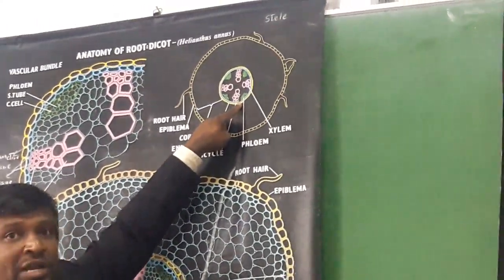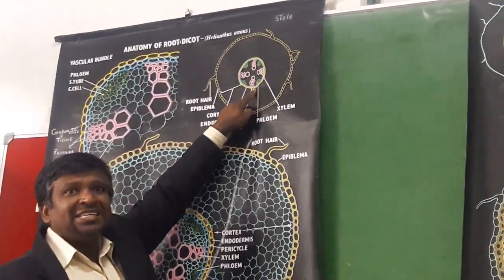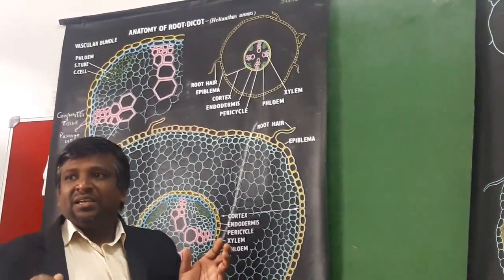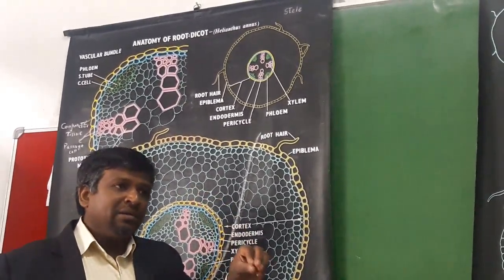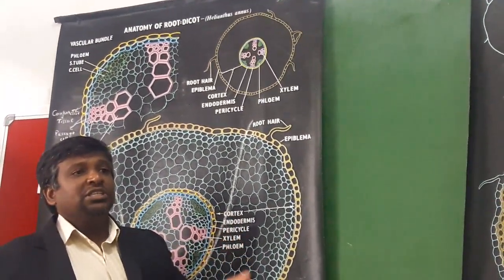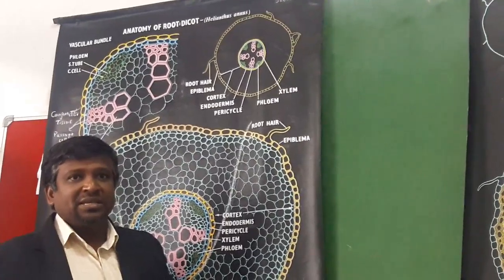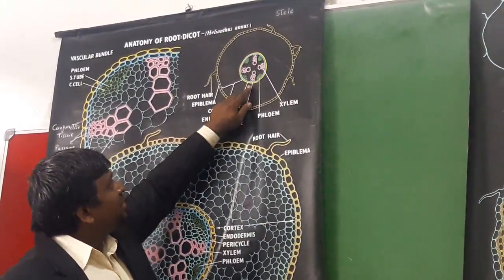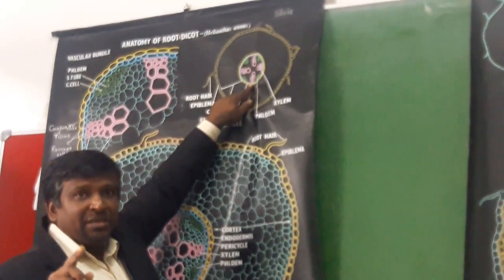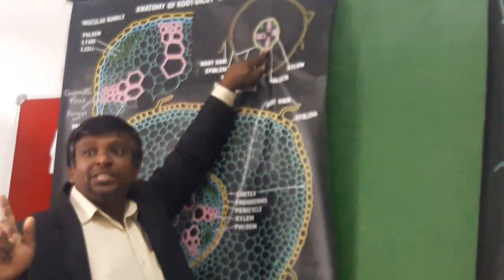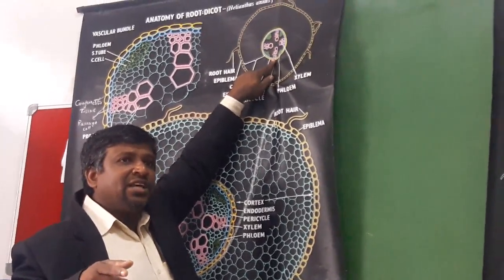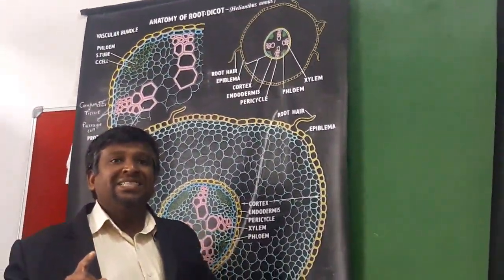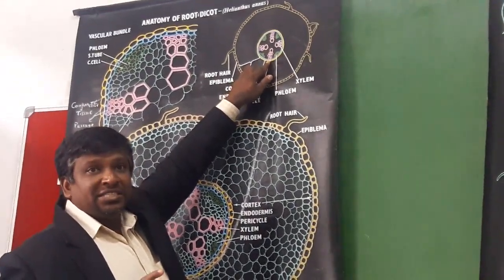The innermost layer of cortex, which you can see as the yellow line, we call it as endodermis. Endodermis is a single layer of barrel-shaped cells which have deposition of a chemical called suberin. The process of deposition of suberin is called suberinization. Only in cells opposite to the xylem, the endodermal cells do not have Casparian thickenings, because Casparian thickenings are due to the presence of suberin. We call such cells as passage cells, just opposite to the xylem element.